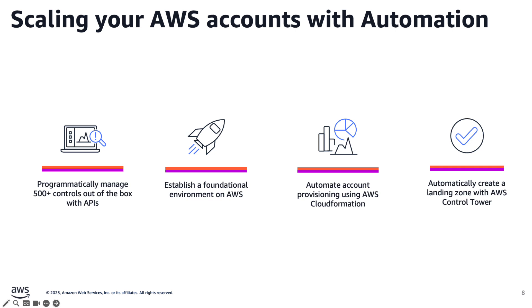If this all sounds like a lot to set up manually, you might want to consider AWS Control Tower, which automates the setup of a landing zone based on AWS Organizations. AWS Control Tower implements many of these best practices automatically, creating the initial structure and governance controls for you.